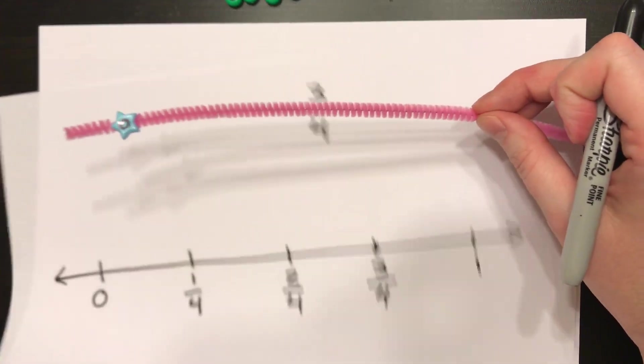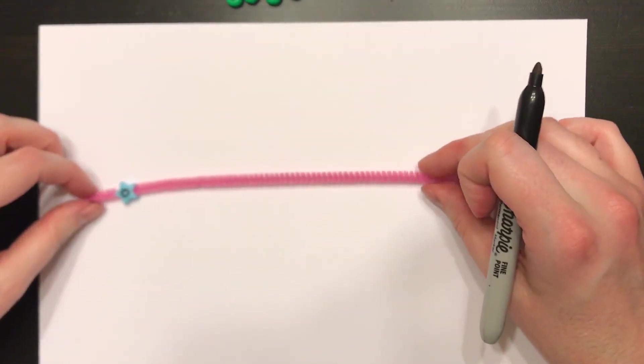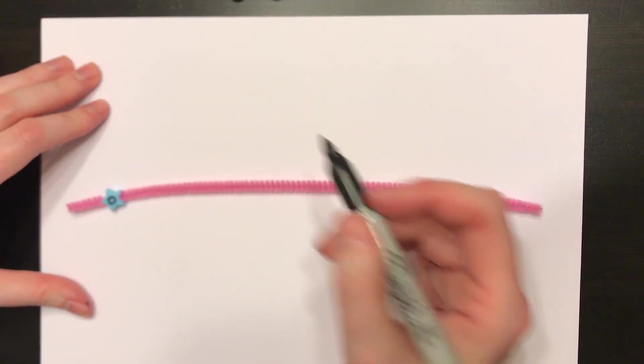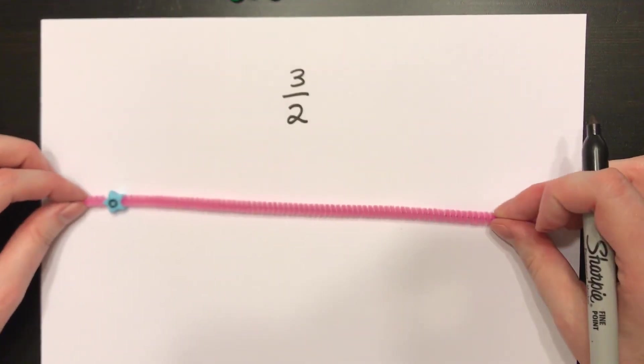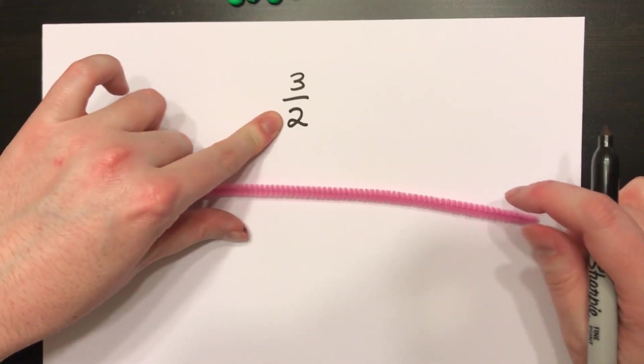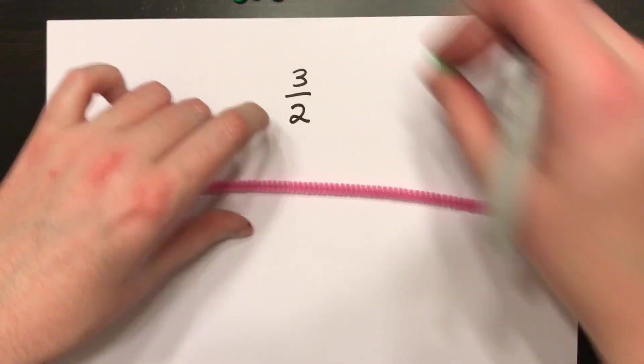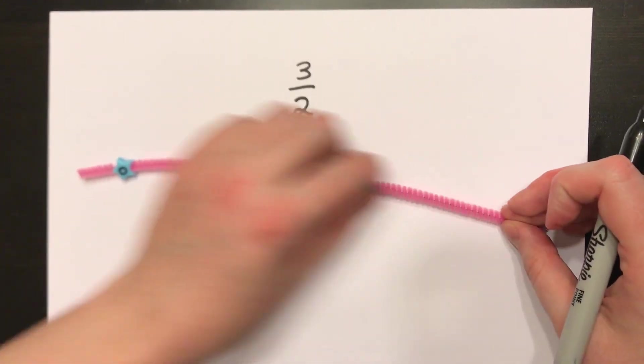So let's say I wanted to show you a fraction, and I wanted you to find me where I can find the fraction 3 halves. Ooh, 3 halves. My denominator is 2, breaking my pieces into two parts. I need 1 bead to do that.